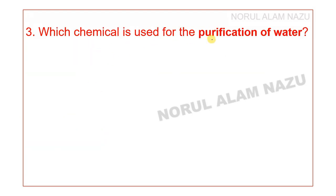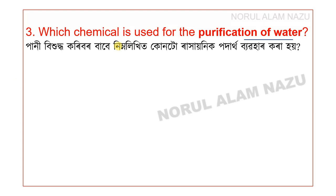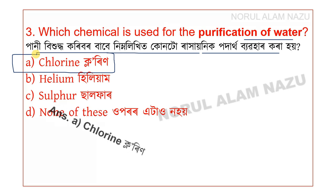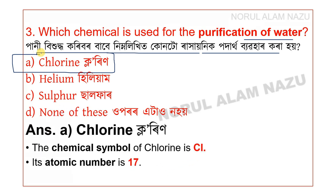Which chemical is used for the purification of water? The options are Chlorine, Helium, and Sulphur. The answer is Chlorine. Chlorine has the chemical symbol Cl and atomic number 17.